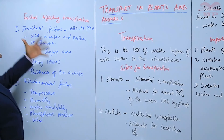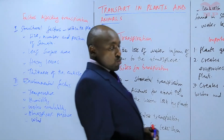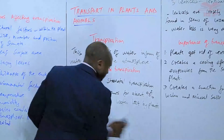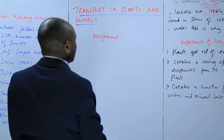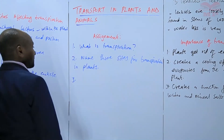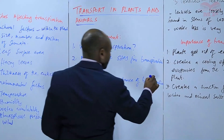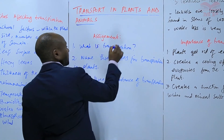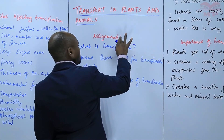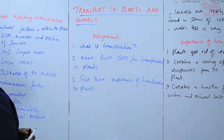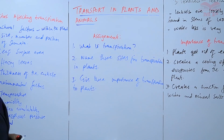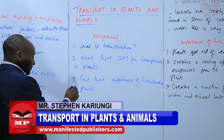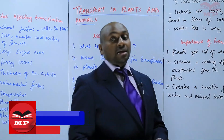Next time we shall elaborate on these factors by explaining how they affect the rate of transpiration. We are also going to have an assignment. Question one: what is transpiration? Number two: name three sites for transpiration in plants. Number three: give three importances of transpiration to plants. We'll stop there until the next lesson. Goodbye.